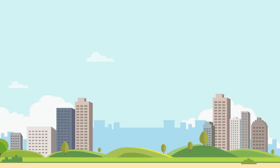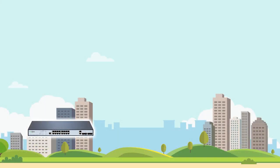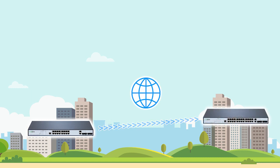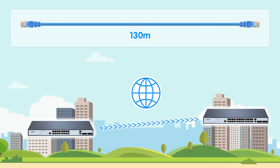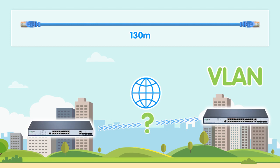Our customer, Andrew, wants to extend the reach of his network to the location where his internet service terminates. He is planning to pull 130m CAT5e Ethernet cables between two switches. The switches are also on the same network, so the internet to the firewall data will be on a separate VLAN. The question is, what kind of extender tool can he use suitable for covering the 130m distance in this scenario?